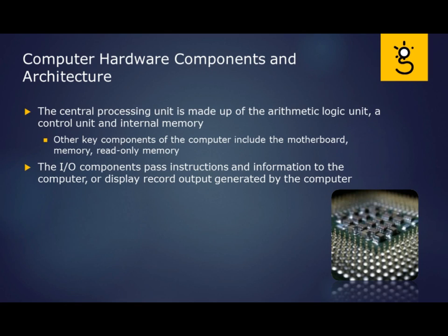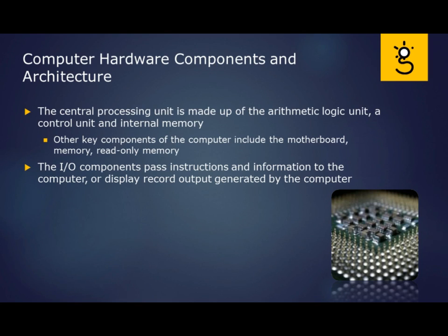Starting with the computer itself and its hardware components — you've got the central processing unit, the CPU. It's made up of an ALU, the arithmetic logic unit, a control unit, and internal memory. The mathematics and the logic of instructions are carried out by that ALU. The control unit controls which instructions are processed, and internal memory aids in that capability.